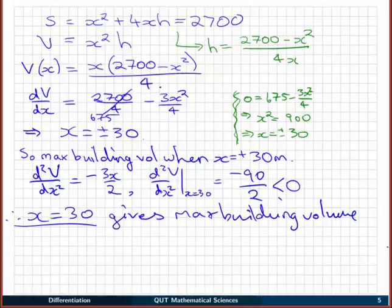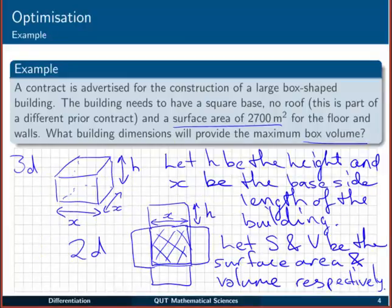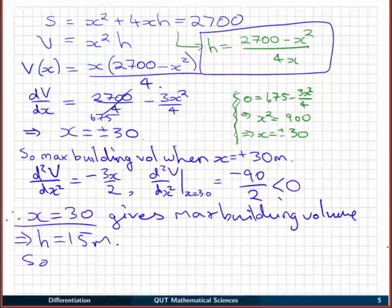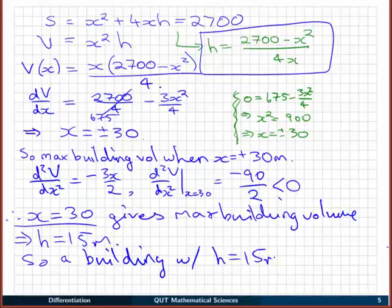The only thing left then to do is to figure out what h is. To do that, we just substitute the value of x equals 30 back into our equation up here for h in terms of x. If we do that, we'll find that h is equal to 15 meters. So we can conclude by answering our question, which was what building dimensions will provide the maximum box volume or building volume. We can say a building with height h equal to 15 meters and side x equal to 30 meters will provide the maximum volume.